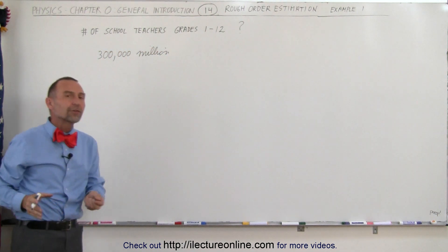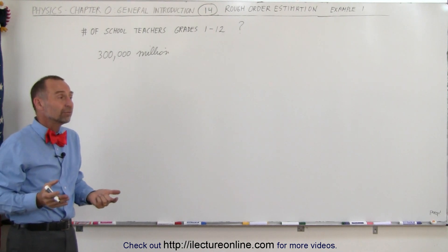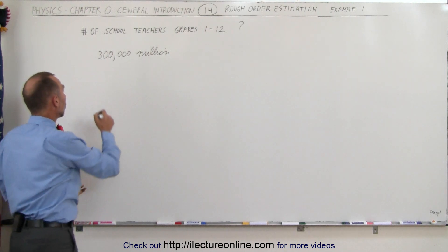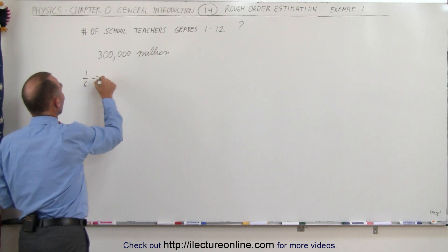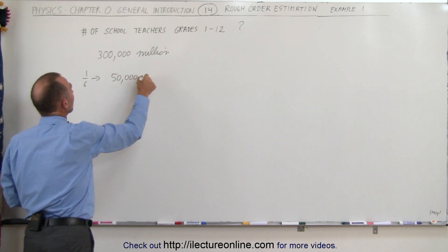Next, you have to figure out, well, of the 300 million, how many students are in grades one through twelve? And let's say maybe about one-sixth. So one-sixth would put you at about, one-sixth of 300 million would put you at about 50 million students.